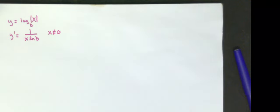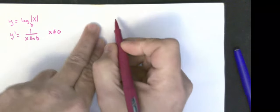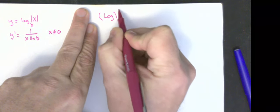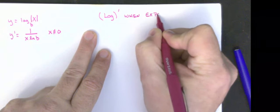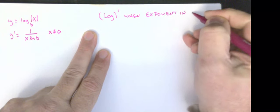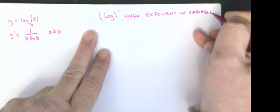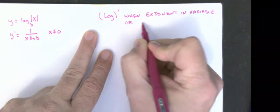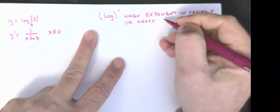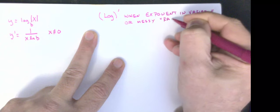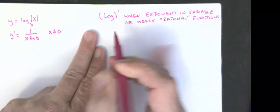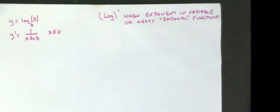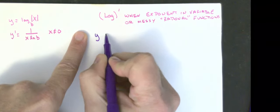Let's talk about other times I would use logarithmic differentiation. We use logarithmic differentiation when the exponent contains a variable — that's the first case. The other case is for messy functions, which we'll call rational functions. Let me do the first one: when the exponent is in the variable. I'm going to do y equals x to the x — another case where the exponent is in the variable.